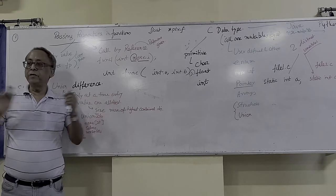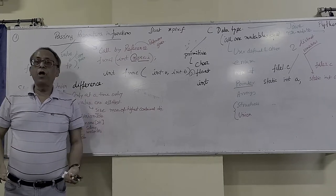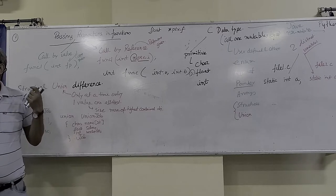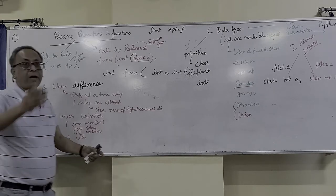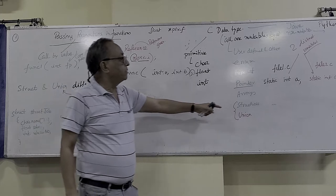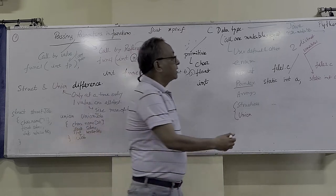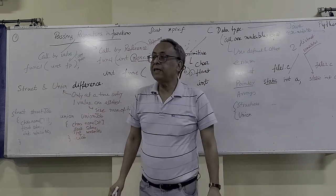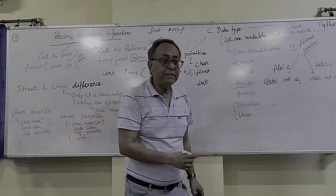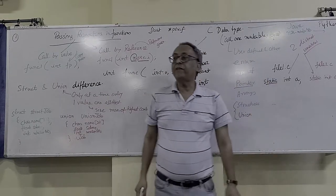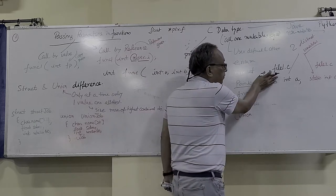Any questions? Call by value is always safer; call by reference is faster. Today's first topic: someone asked about the static keyword — what is linkage? Linkage means why do you use static? Last class I told you: whenever you declare a static variable outside main and other functions in a file, that means it is global with respect to that file only. If you don't put static, the integer variable is global across files.